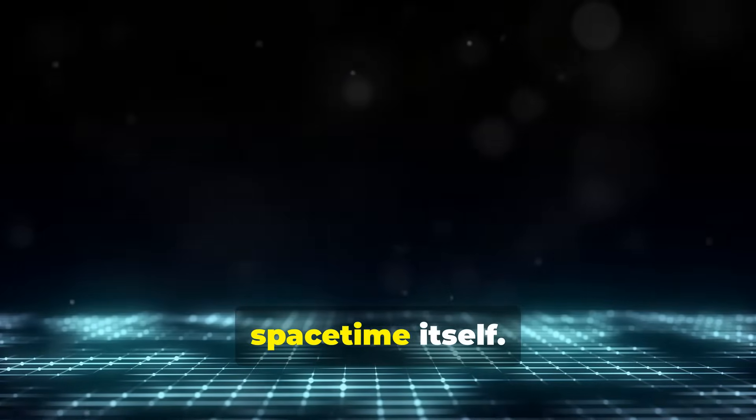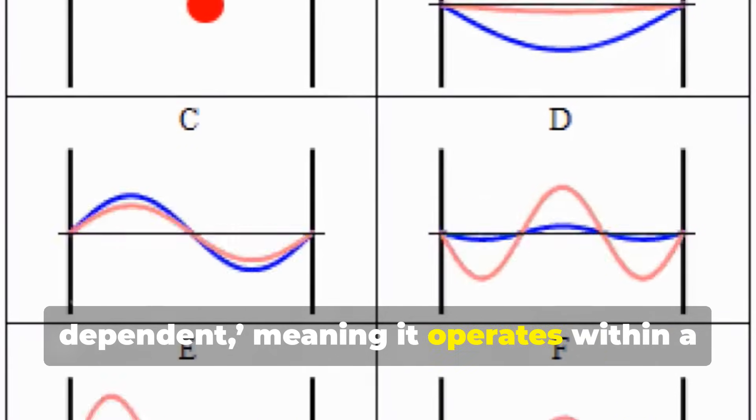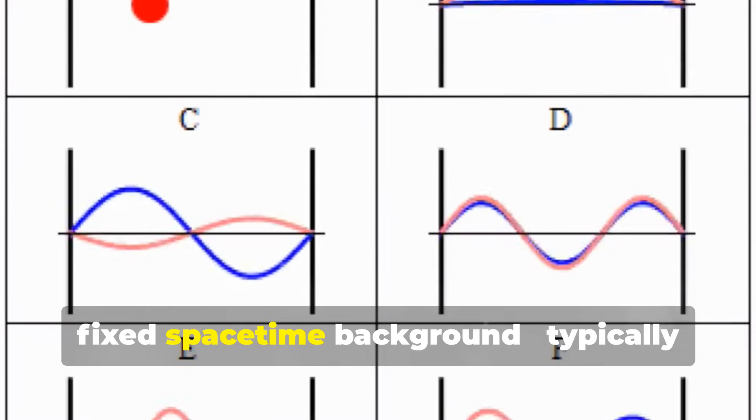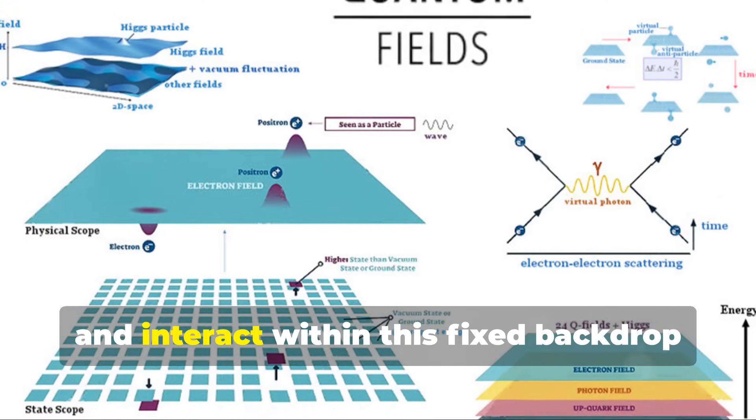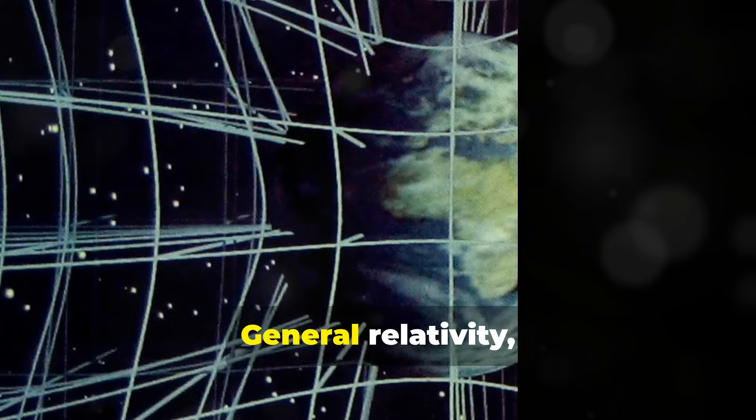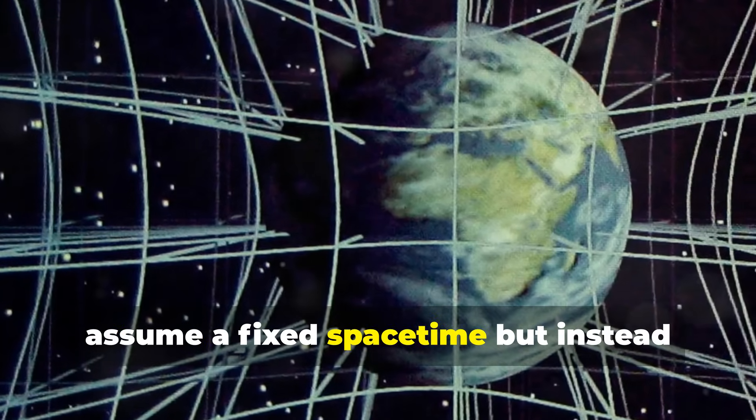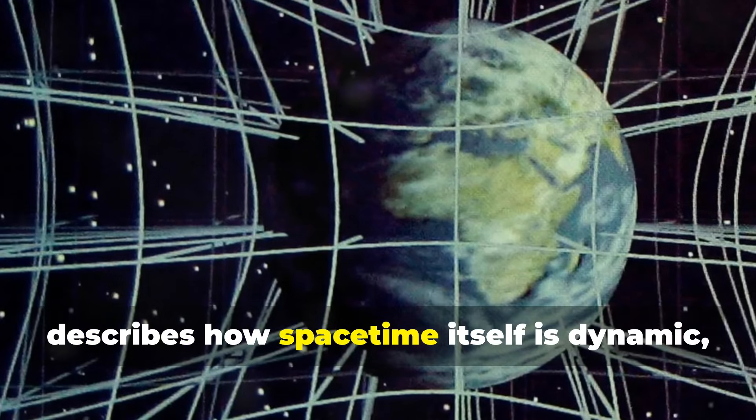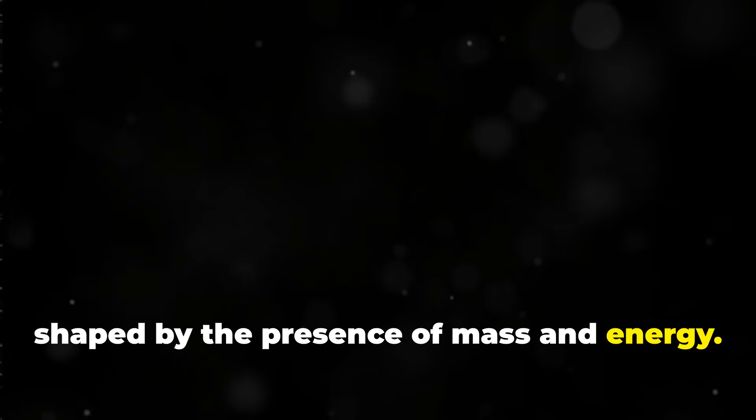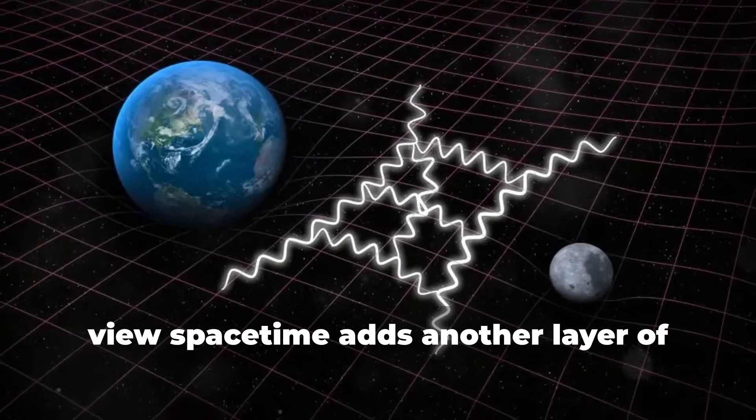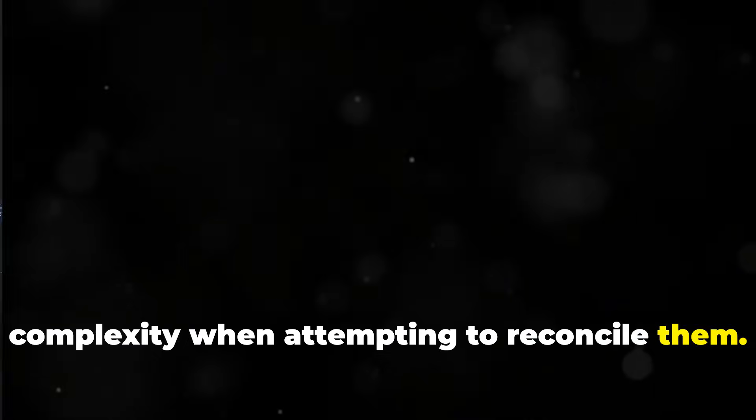Another key difference is the nature of space-time itself. Quantum mechanics is background-dependent, meaning it operates within a fixed space-time background, typically flat and unchanging. All quantum fields and particles exist and interact within this fixed backdrop. General relativity, on the other hand, is background-independent. It doesn't assume a fixed space-time, but instead describes how space-time itself is dynamic, shaped by the presence of mass and energy. This divergence in how the two theories view space-time adds another layer of complexity when attempting to reconcile them.